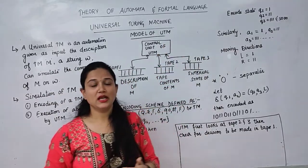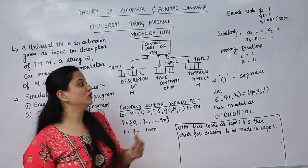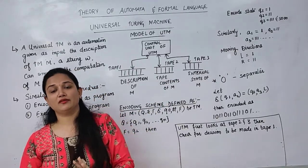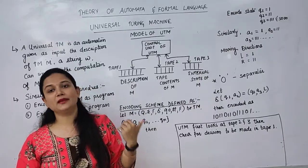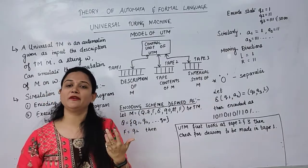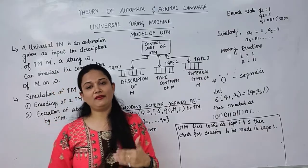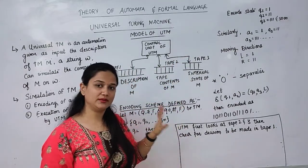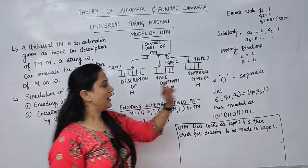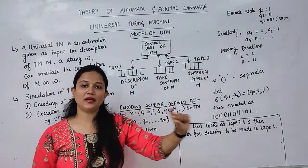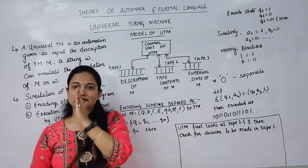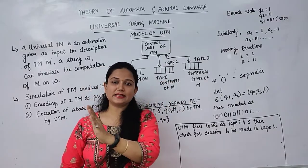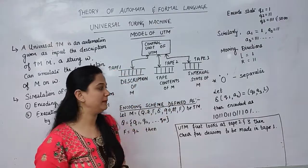For moving directions: Left is encoded as '1' and Right is encoded as '11'. It is not mandatory to use this same encoding scheme — we can change it. There are different ways to define it, depending on how we construct the universal Turing machine. Here '0' will be the separator — we use 0 as a separator to denote boundaries between state, alphabet, and other parameters.